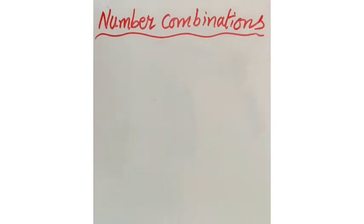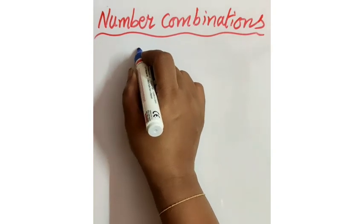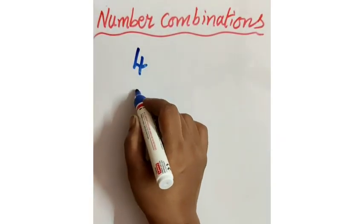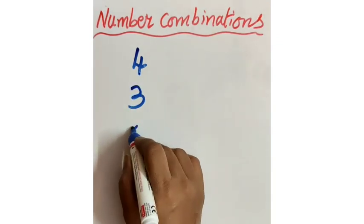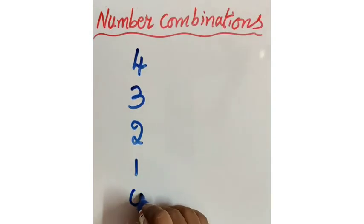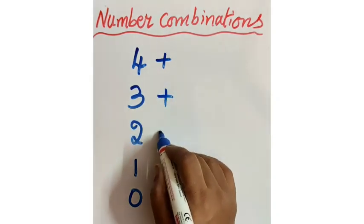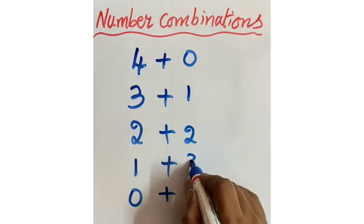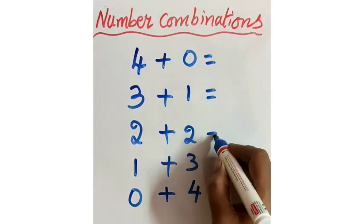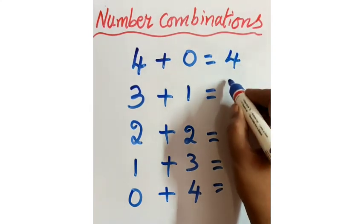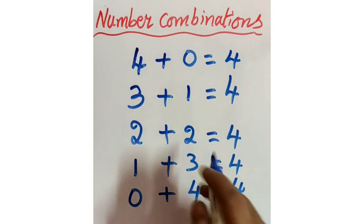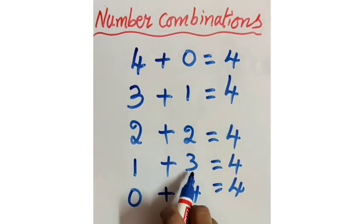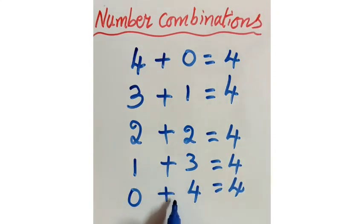Now let us go for combinations of 4. Come on, tell me what you have to write first. Since we are finding combinations of 4, write 4 first. Before 4: 3, 2, 1, 0. Plus — now start with 0 after: 0, 1, 2, 3, 4. See here: 4 plus 0 equal to 4, 3 plus 1 equal to 4, 2 plus 2 equal to 4, 1 plus 3 equal to 4, 0 plus 4 equal to 4.